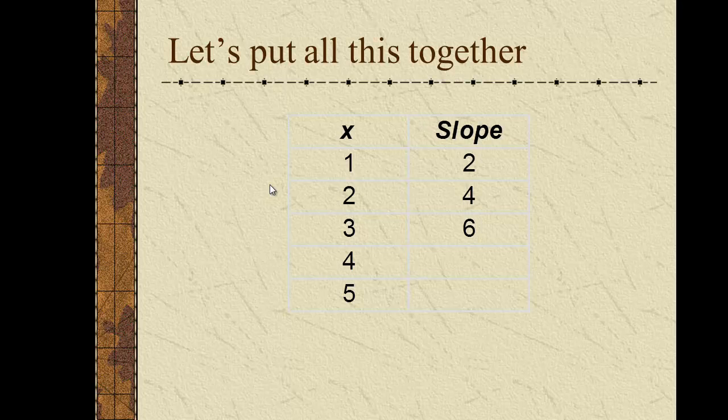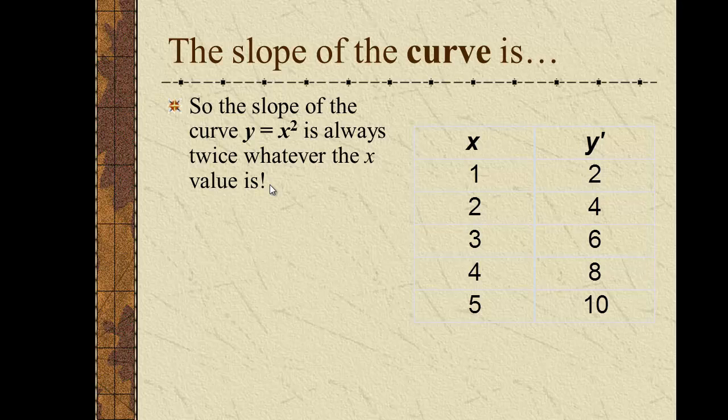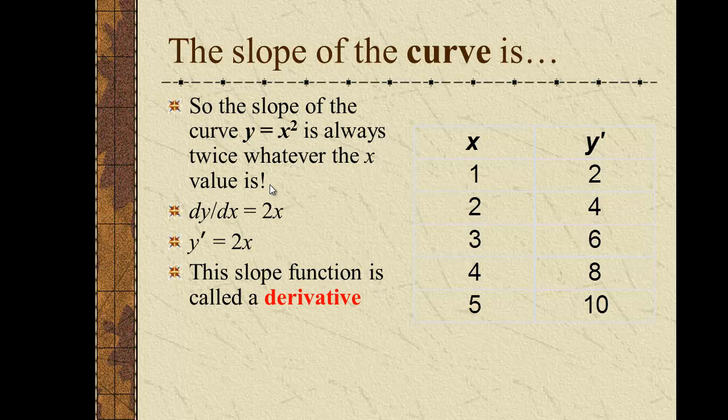So in order to see patterns, we put things into tables. When x was one, the slope was two. When x was two, the slope was four. And when x was three, the slope was six. So do you see the pattern? The slope of the curve y equals x squared is always twice whatever the x value is. Now in algebraic form, dy over dx equals 2x. We can also write it y prime equals 2x. This slope function is called a derivative. That's one of the most important concepts in calculus.